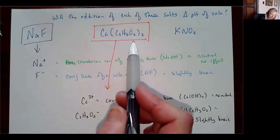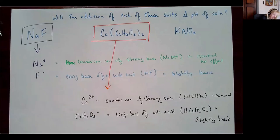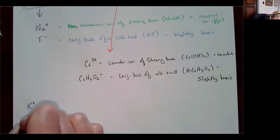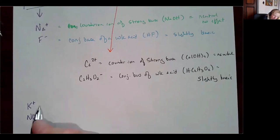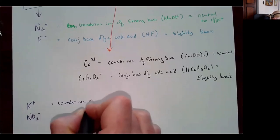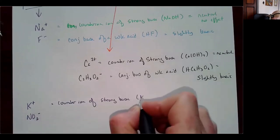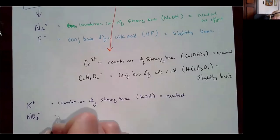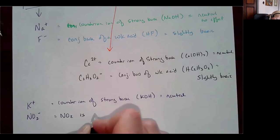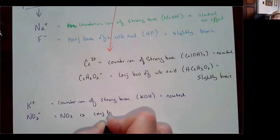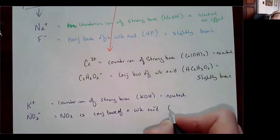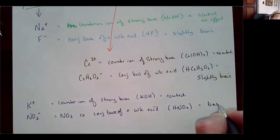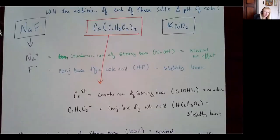For calcium acetate: calcium ion is the counter ion of strong base Ca(OH)₂ — neutral, no effect. Acetate ion, C₂H₃O₂⁻, is the conjugate base of a weak acid, acetic acid HC₂H₃O₂ — so it's going to be slightly basic. Adding calcium acetate to solution will increase the pH, making it slightly basic.